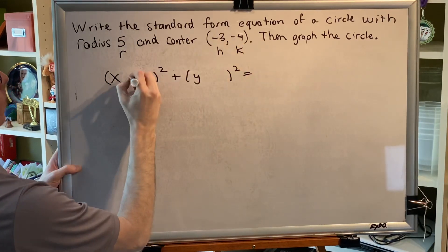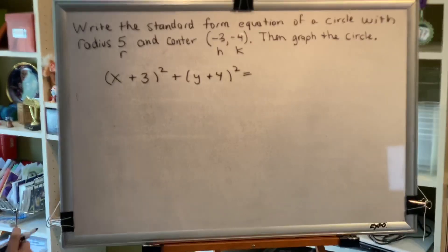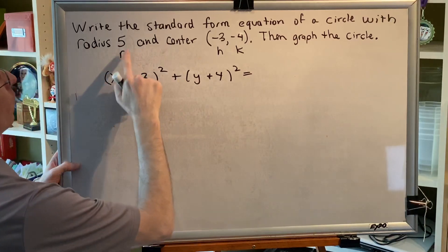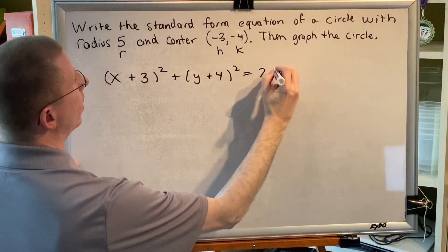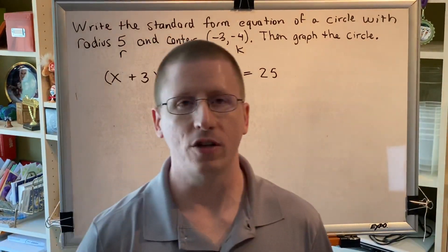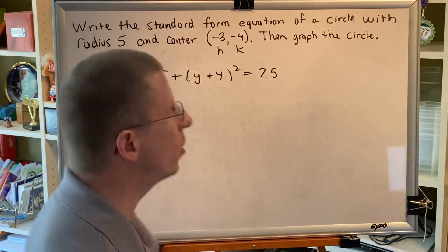So instead of negative three, we write plus three. And instead of negative four, we provide plus four. We know that the standard form equation of a circle ends in r squared. So if r is five, five squared must be 25. It's very important that you develop the ability to write the equation in standard form for your circle simply by looking at the information provided.